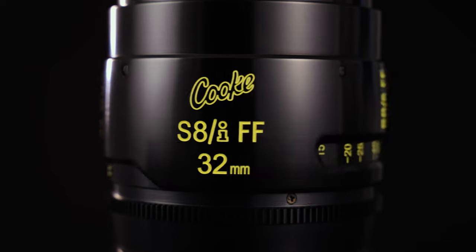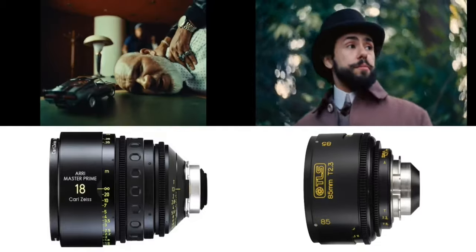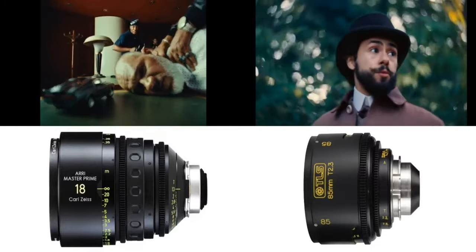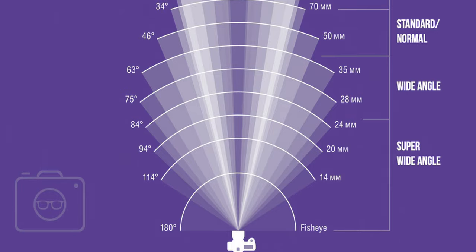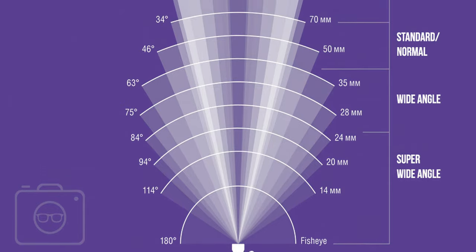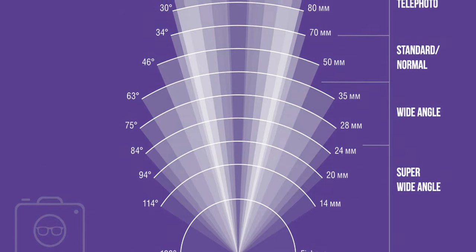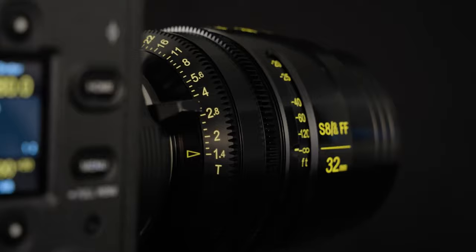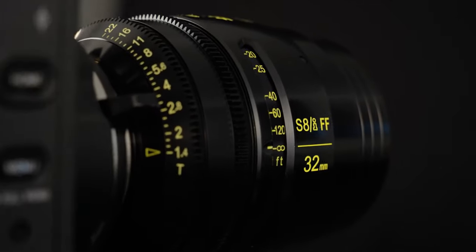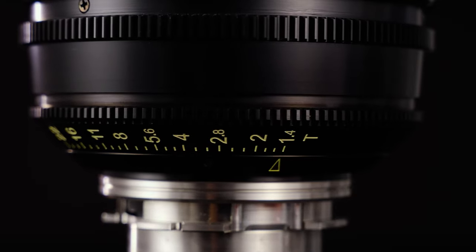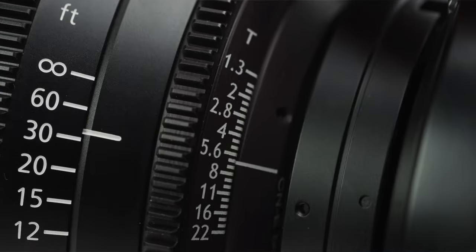Other markings found on the lens include the focal length, which represents the field of view. This is not to be mistaken with the angle of view, which describes how the lens sees the world from edge to edge. Field of view is expressed in millimeters and the angle of view is expressed in degrees — so a 40mm lens does not have an angle of view of 33.4 degrees. Also found on the lens are aperture markings in T-stop for cinema lenses, which communicate the amount of light that passes through the iris opening of the lens.